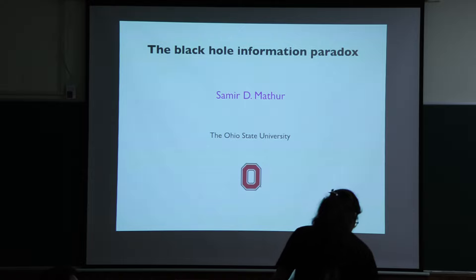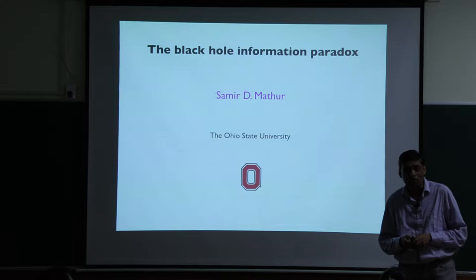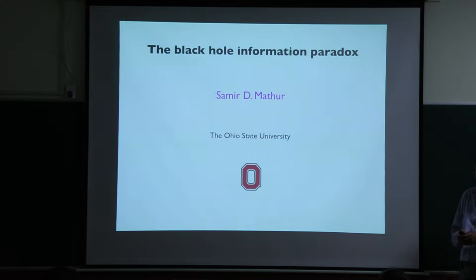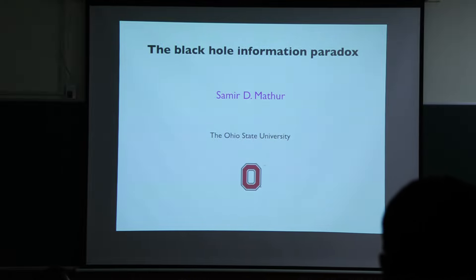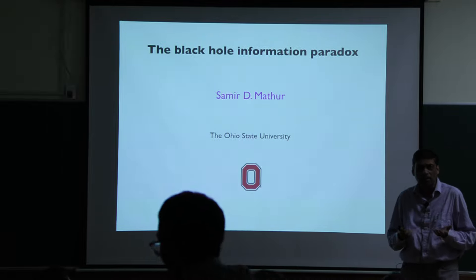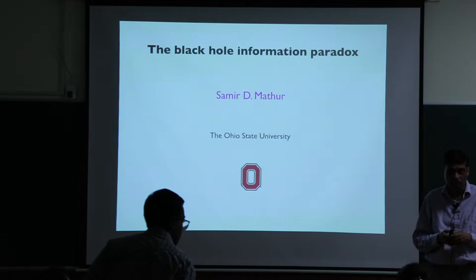What I'll try to do is start from absolute scratch and try to introduce you to this thing that Stephen Hawking became famous for. He found this thing called the black hole information paradox, which has basically governed our thinking of fundamental physics for four decades now. So let's just learn what the paradox is, why it is so important, and how we think it is now solved in string theory.